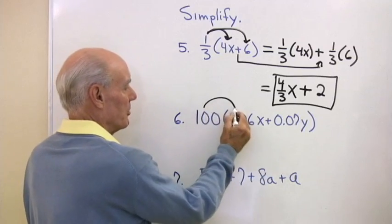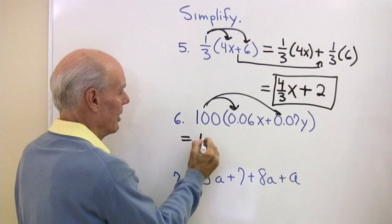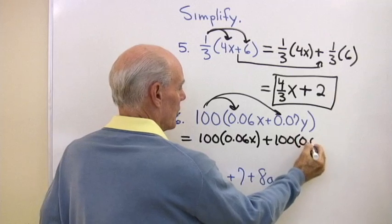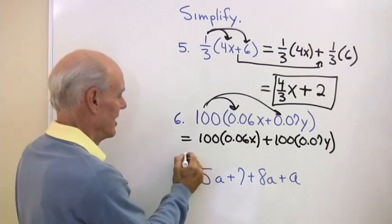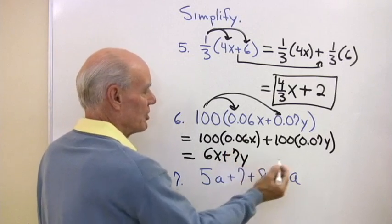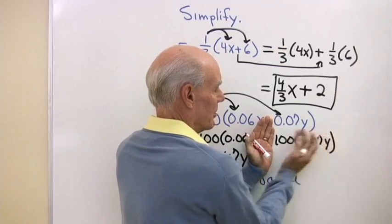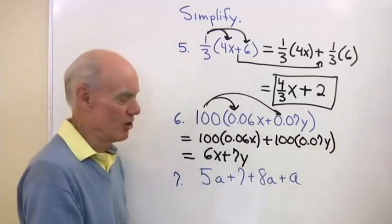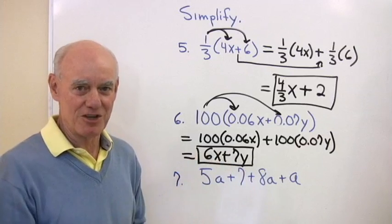Here's another distributive property: 100 times the quantity 0.06x plus 0.07y. Distributing gives 100 times 0.06x plus 100 times 0.07y. 100 times 0.06 is 6, and 100 times 0.07 is 7, using the associative property to regroup the multiplication. So the result is 6x plus 7y. This type of problem will come up again as part of the solution to application problems later on.